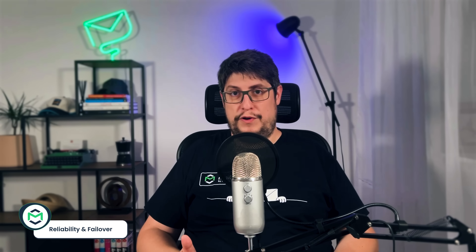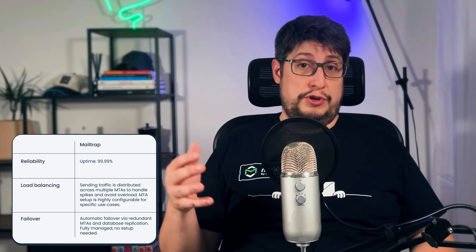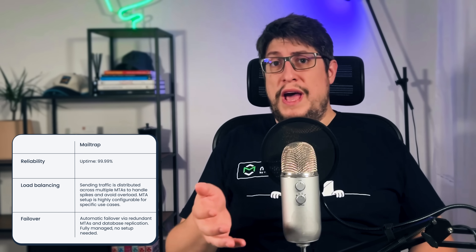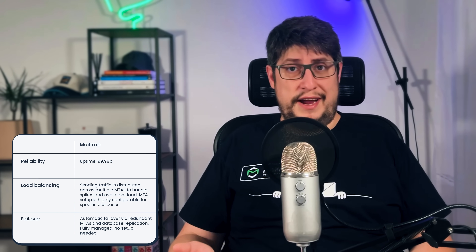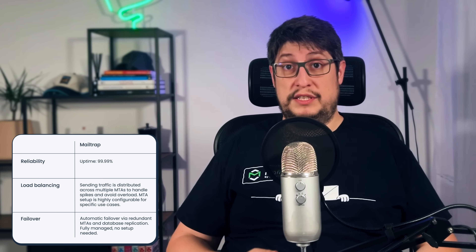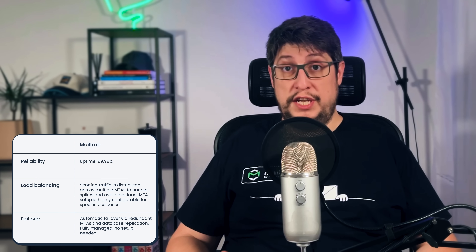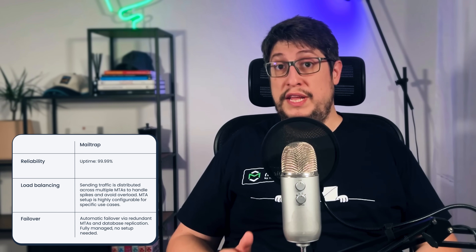Let's talk about reliability and failover — things you hope to never worry about, but really should understand before anything goes wrong. Both MailTrap and Postmark promise 99.99% uptime. MailTrap keeps things stable with a distributed MTA setup and replicated databases. If one server goes down, others take over automatically — fully managed, no configuration needed. MailTrap's MTA configuration is also flexible by design, so if you have specific routing or load balancing needs — like isolating traffic types, handling sensitive messages separately, or optimizing delivery for specific geos — it can be tailored to meet your sending needs.